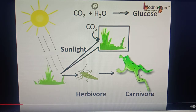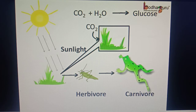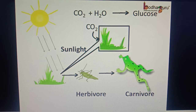The plant is a biotic component that uses the abiotic components like water, air, and sunlight for making its food. The animals depend on plants for food directly or indirectly.